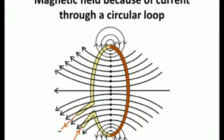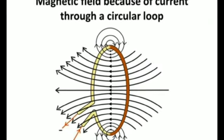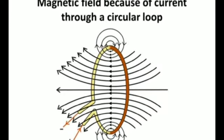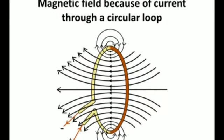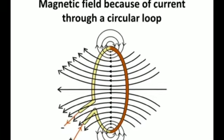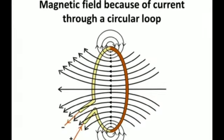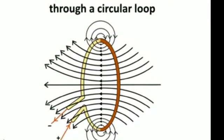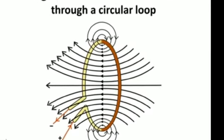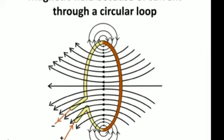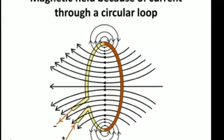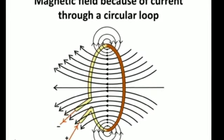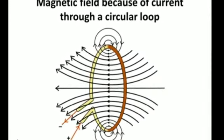Every point on the wire carrying current would give rise to the magnetic field appearing as straight lines at the center of the loop. Now let us understand in detail the magnetic field around a current carrying circular loop.